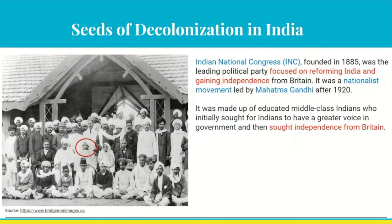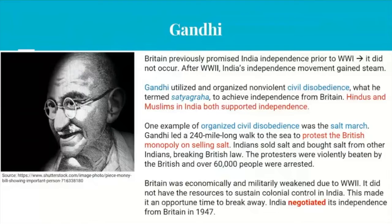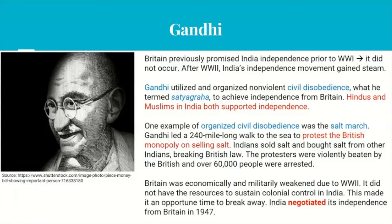Gandhi organized non-violent civil disobedience - what he termed Satyagraha - to achieve independence from Britain. Both Hindus and Muslims in India supported independence, despite different religious perspectives and cultural traditions. One famous example of organized civil disobedience was the Salt March, where Gandhi led a 240-mile walk to the sea to protest the British monopoly on selling salt. Indians sold and bought salt from each other, deliberately breaking British law. The protesters were violently beaten by the British and over 60,000 people were arrested.